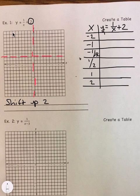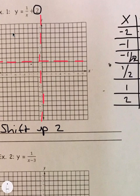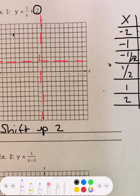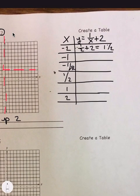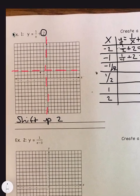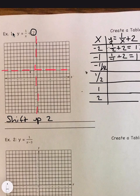So when I put this in, I get negative 1 over 2 plus 2. And so negative 1 half plus 2 is just going to be 1 and 1 half. So at negative 2, I'm at 1 and 1 half. So it's going to be about right there. At negative 1, I have 1 over negative 1 plus 2. So negative 1 plus 2 is at 1. So at negative 1, I'm at 1.